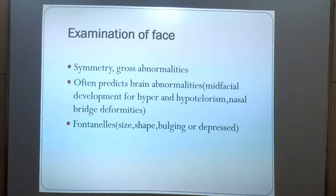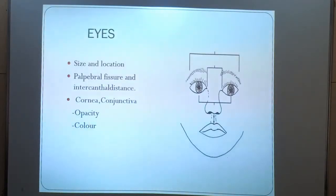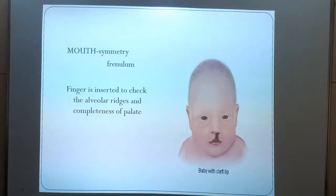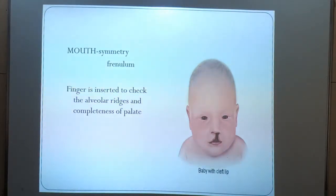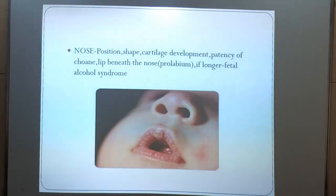In examination of the face, symmetry and gross abnormalities are noted. Fontanelle size, shape, bulging or depression should be noted. Regarding the eyes, size, location, palpebral fissure and intercanthal distance, cornea and conjunctiva for opacity and color are noted. In the mouth, a finger is inserted to check the alveolar ridges and completeness of the palate to detect cleft lip or cleft palate. For the nose, position, shape, and cartilage development are noted.